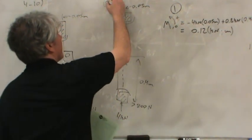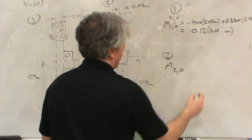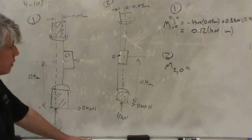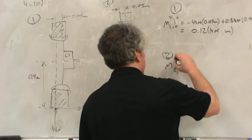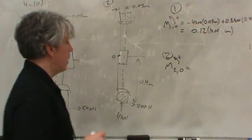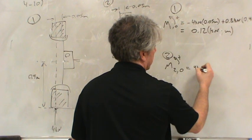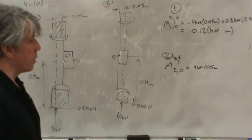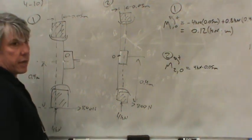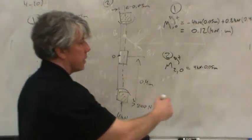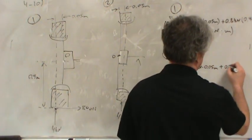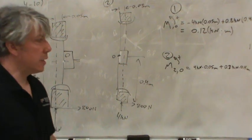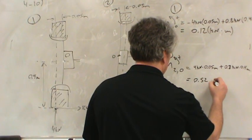What about case two? We want the moment for case two about O. Help me write this one out. I wrote the last one out for you. The moment of the four kilonewton force. Clockwise, counterclockwise. Therefore, positive or negative? Positive. Magnitude? Four kilonewtons times 0.05 meters. Good. What's the moment of the 800 newton force? Positive or negative? It's also positive, isn't it? Magnitude? Times? 0.04 meters. Good. See how they're adding together this time instead of subtracting? As a matter of fact, that number comes out to 0.52 kilonewton meters.